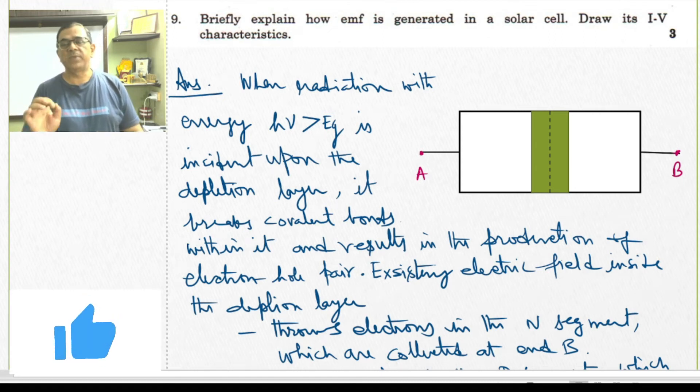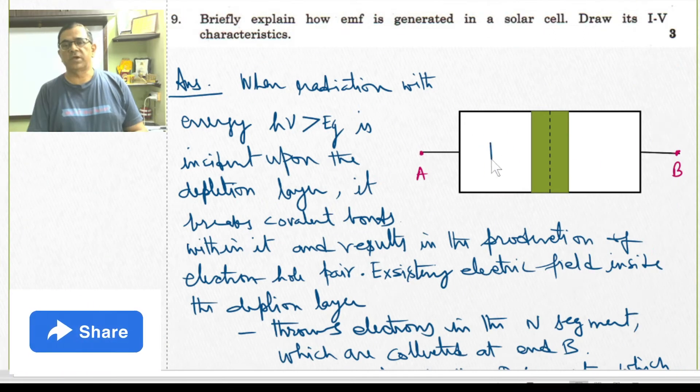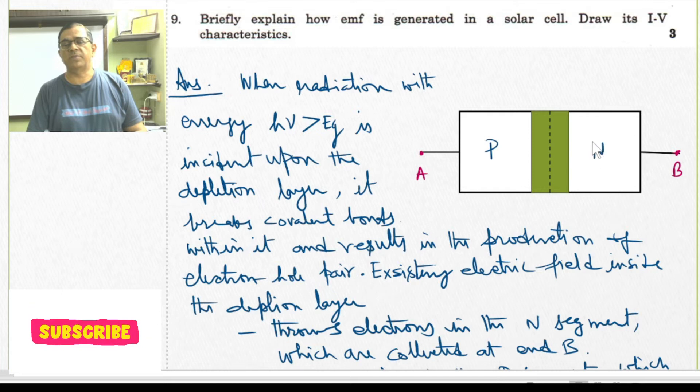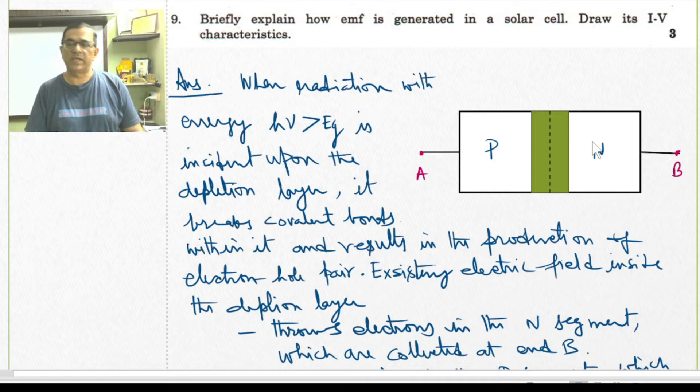A solar cell is essentially a PN diode. To construct P segment and N segment, we use material whose energy gap lies between 1.0 electron volt to 1.8 electron volt.